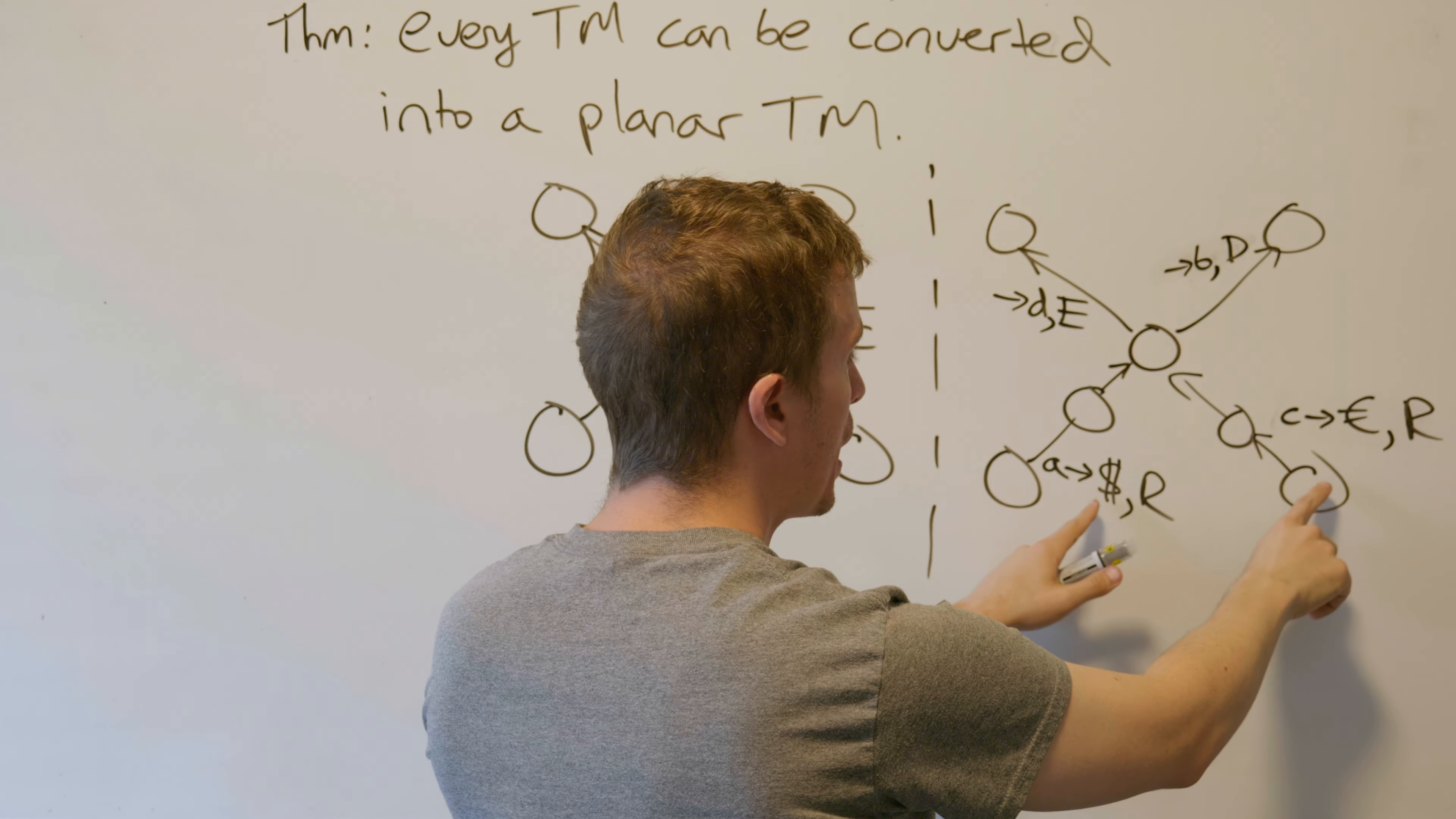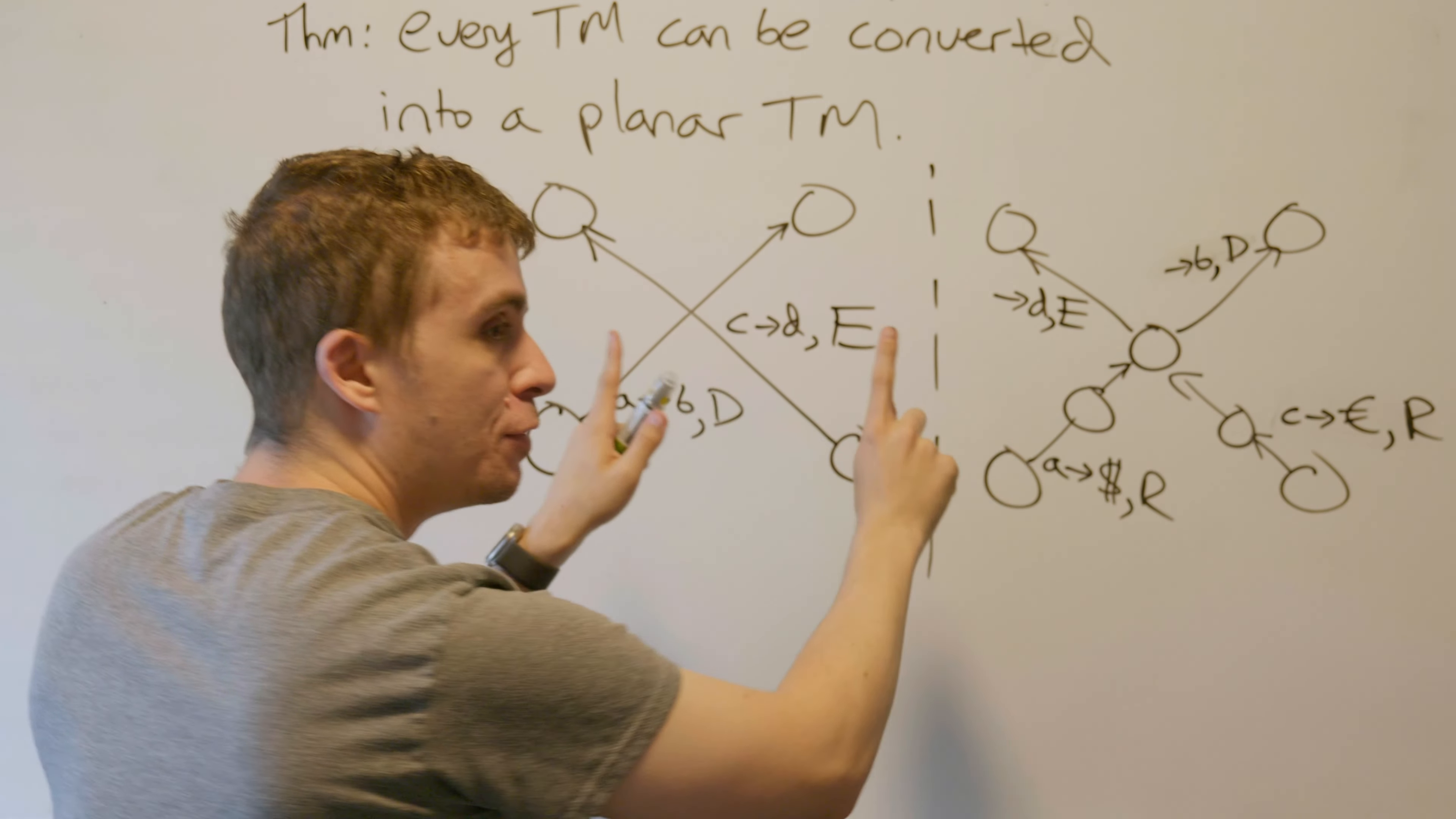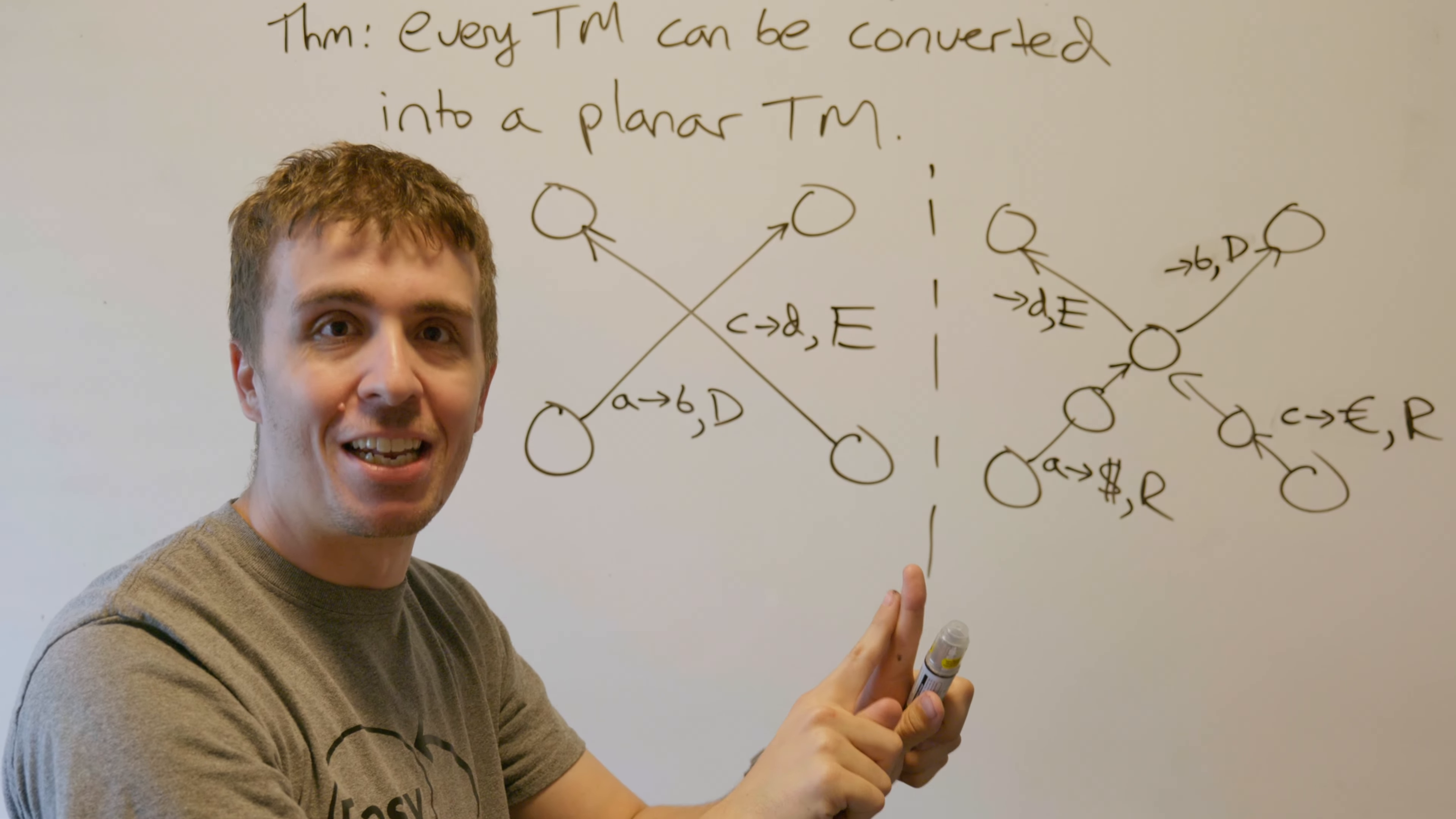In either one of these, we're reading an A or a C, and then we're changing that cell into a dollar sign or a euro, and then we're moving right. So we move right, and then we want to move left.